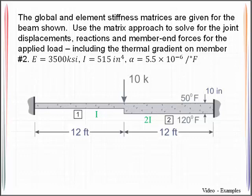We are being told that the global and element stiffness matrices have already been given. We're being asked to use the matrix approach to solve for the joint displacements, reactions, and member end forces associated with the applied loading. And that applied loading not only includes this 10 kips, but also includes a thermal gradient on member number two.